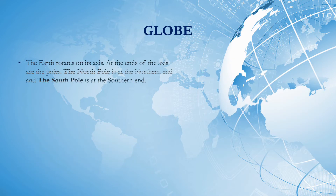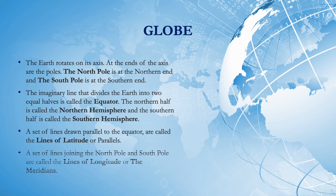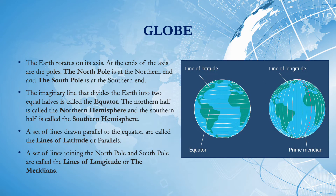Moving on to some more important points related to the globe. The Earth rotates on its axis; at the ends of the axis are the poles. The north pole is at the northern end and the south pole is at the southern end. The imaginary line that divides the Earth into two equal halves is called the equator. The northern half is called the northern hemisphere and the southern half is called the southern hemisphere.